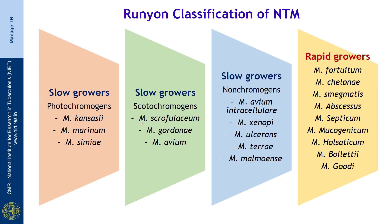The Runyon classification divides non-tuberculous mycobacteria into two groups: slow growers and rapid growers. Among the slow growers causing pathogenic disease are M. kansasii, M. scrofulaceum, M. avium, M. intracellulare, and M. xenopi — all commonly encountered in human lung disease. Among the rapid growers we have M. fortuitum, M. smegmatis, M. abscessus, and M. bolletii, all resulting in pathogenic disease in humans.